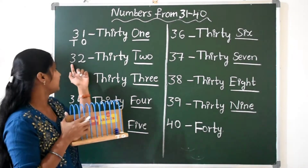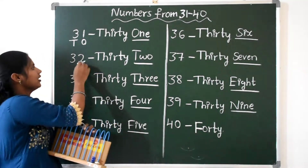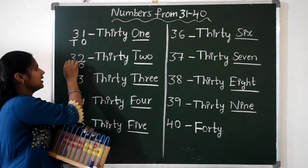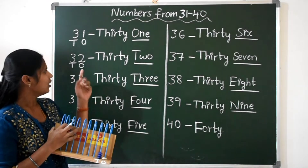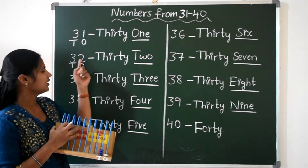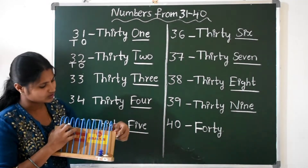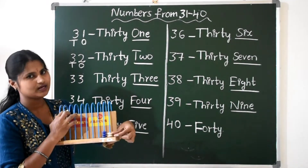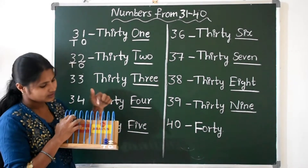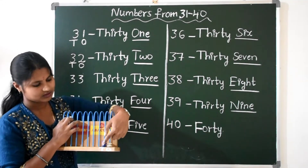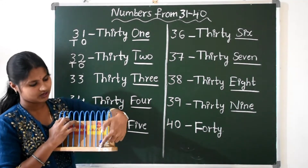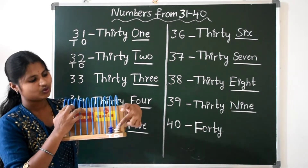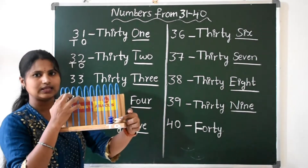Next, 32. Write down the place values: ones place and tens place. How many ones here? 2 ones. So, ones place: 2 beads. And tens place: 3 beads — 1, 2, 3. So 3 and 2 makes 32.